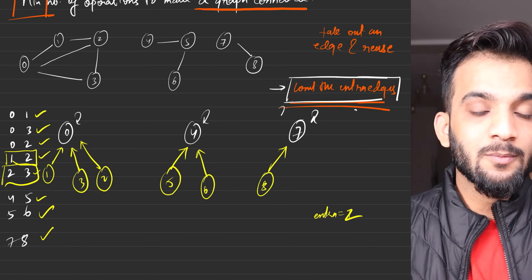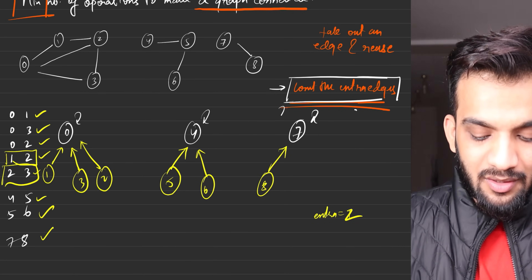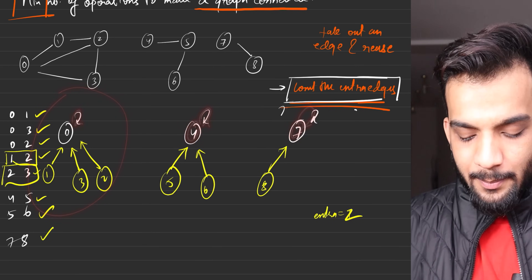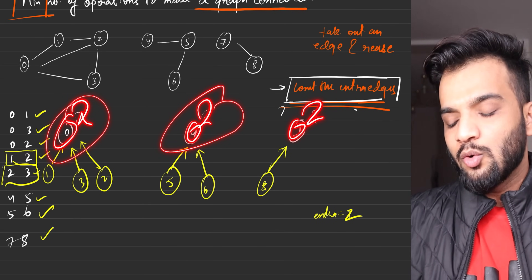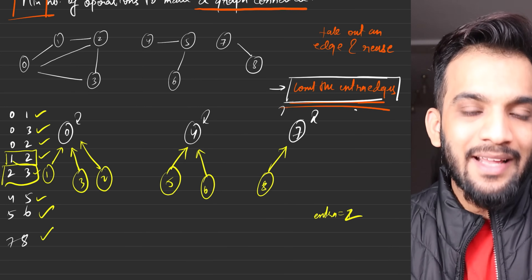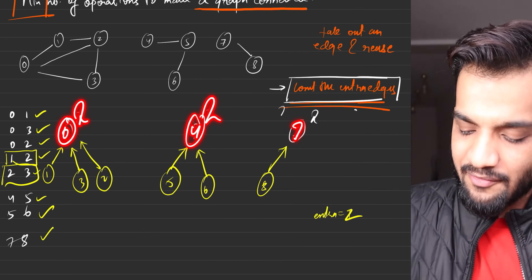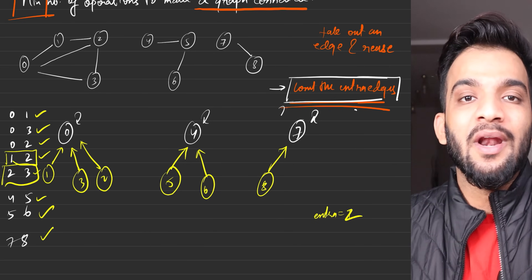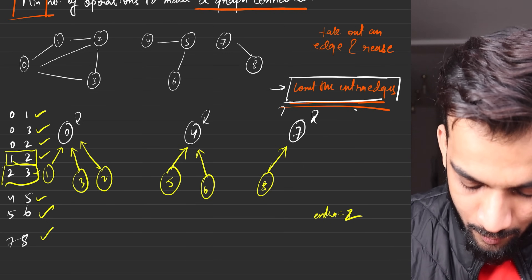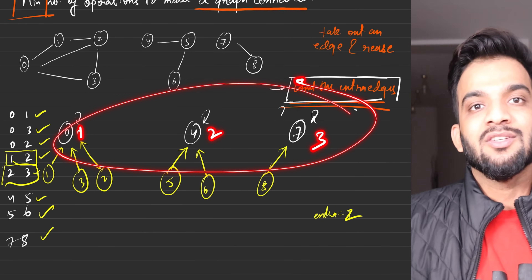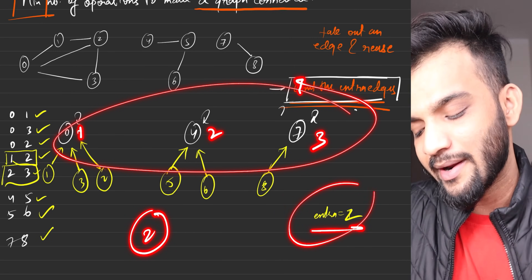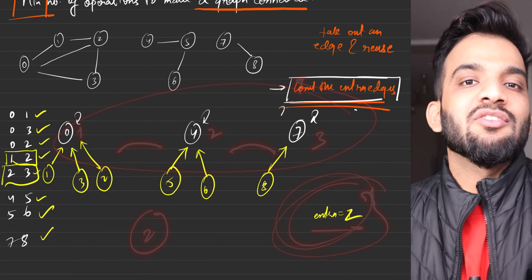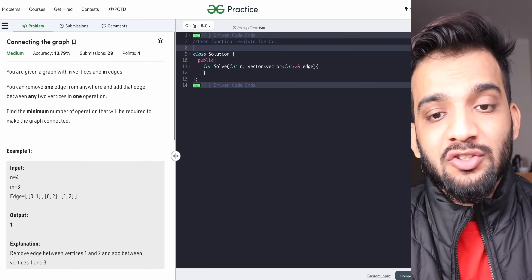Now, how many components? Very simple — in the parent array, only three nodes point to themselves: zero, four, and seven. Anyone who points to himself is an ultimate parent and counts as a component. So we have three components. The required answer will be three minus one equals two. Do we have two extra edges? Yes! So the answer is confirmed: two operations.